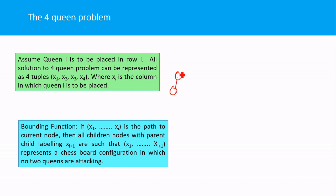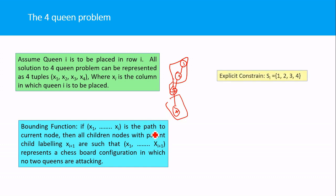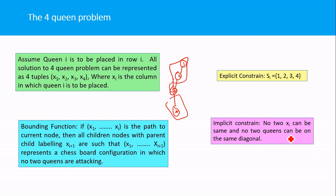The bounding function states that when building from node 1 to choice 3, no queens attack each other, and when adding choice 4, the queens still must not attack each other. The explicit constraint is that xi must be either 1, 2, 3, or 4 (i.e., a valid column). The implicit constraint is that no two queens can attack each other — specifically, no two queens can be on the same diagonal.